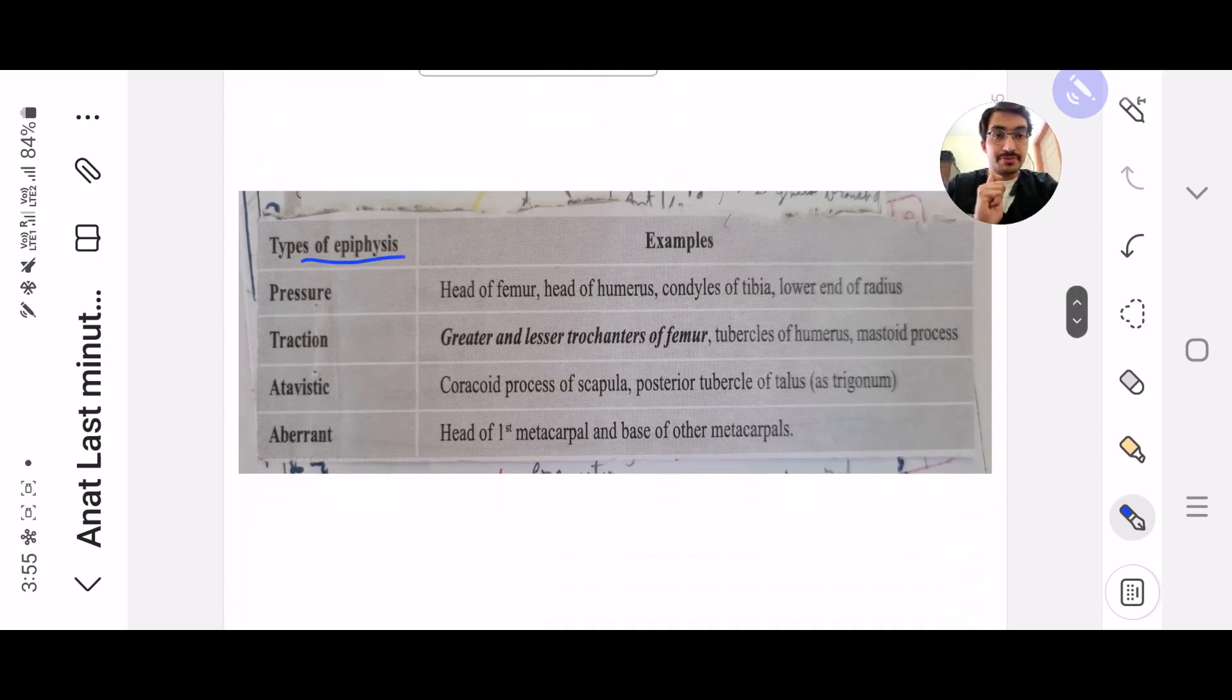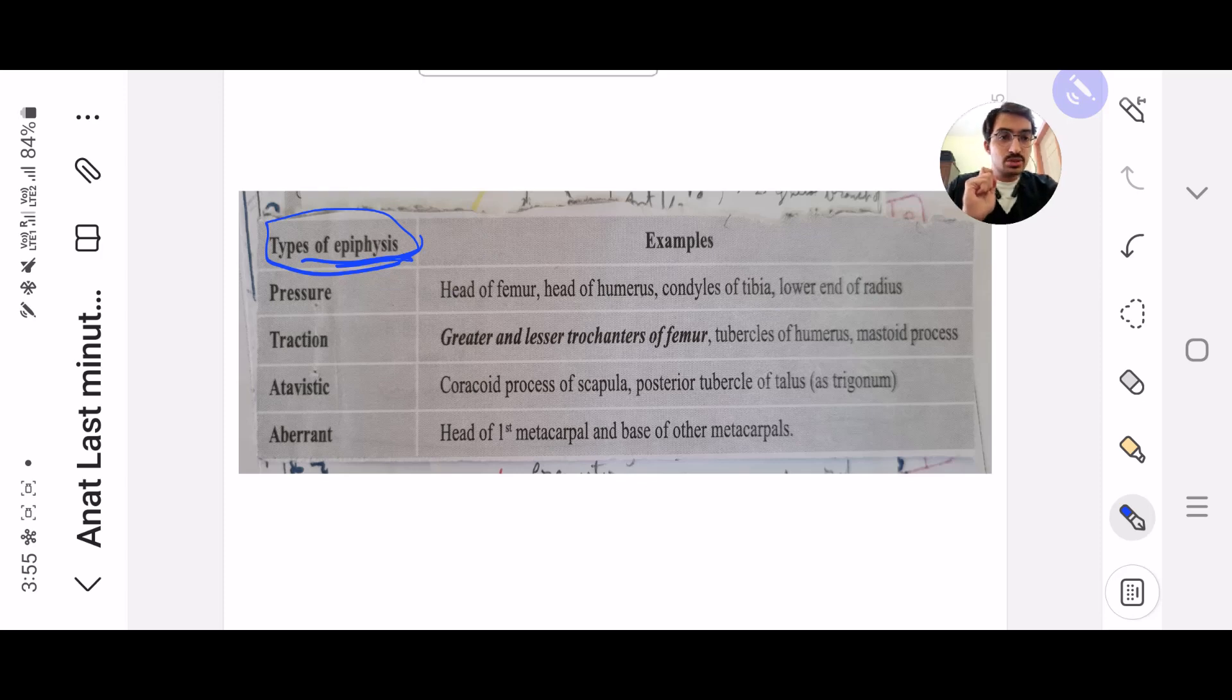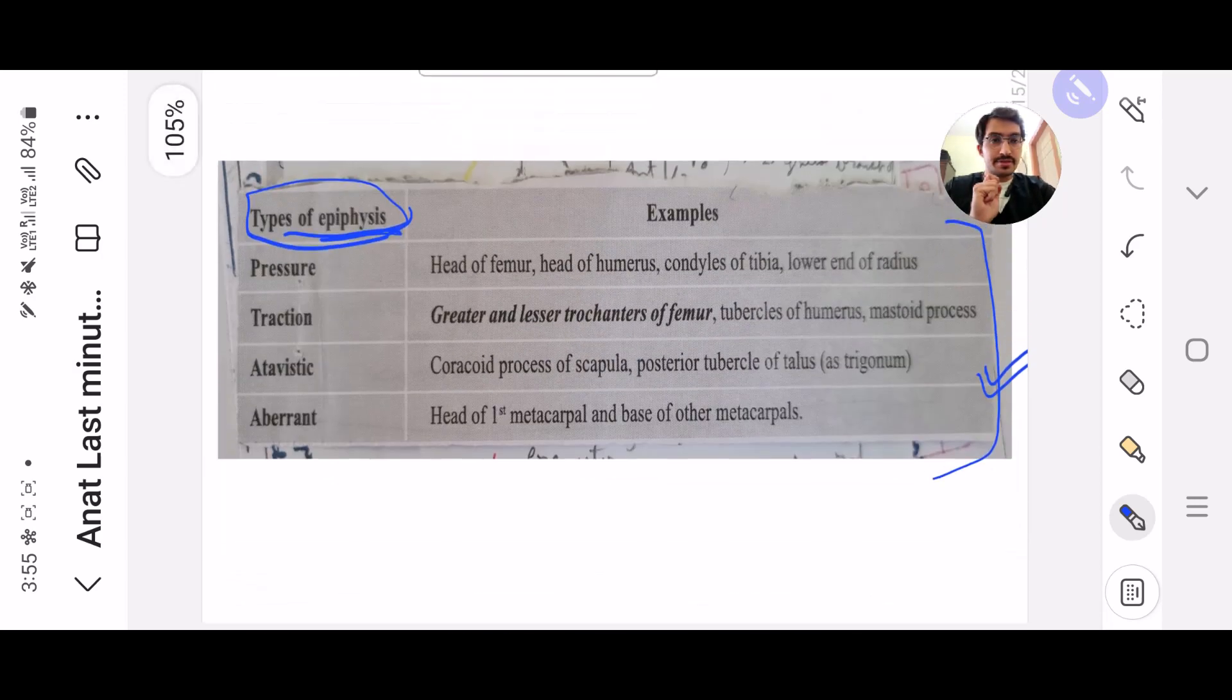Now this is the nerve supply of the scrotum and this is often asked in the exams. It's always like posterior two-third or root of the pinnaces are supplied by what nerve. So this is a simple diagram with the nerves. Next.